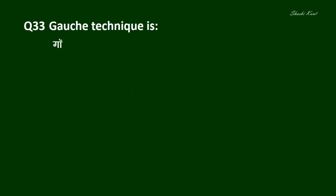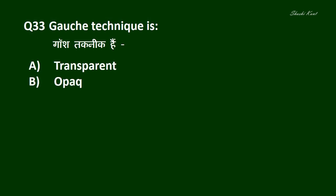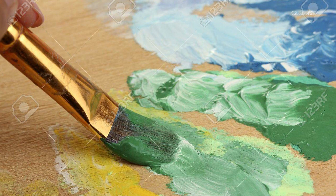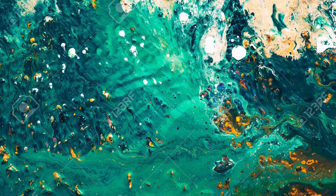Question No. 33: Gouache technique is — A. Transparent, B. Opaque, C. Done with clay, D. With oil color. And the correct answer is B. Opaque. Gouache painting technique is one in which a gum or an opaque white pigment is added to watercolor to produce opacity. In watercolor, the tiny particles of pigment become enmeshed in the fiber of the paper. In gouache, color lies on the surface of the paper, forming a continuous layer or coating.